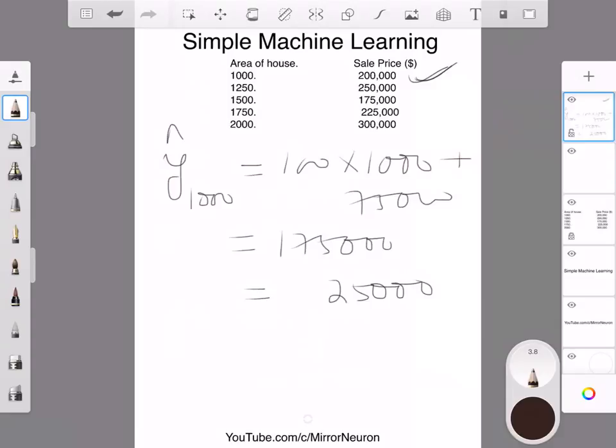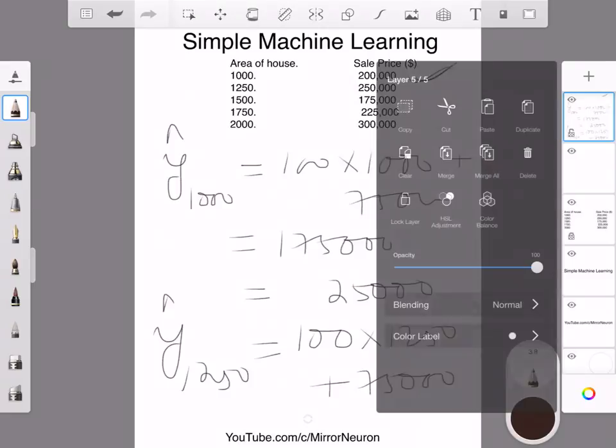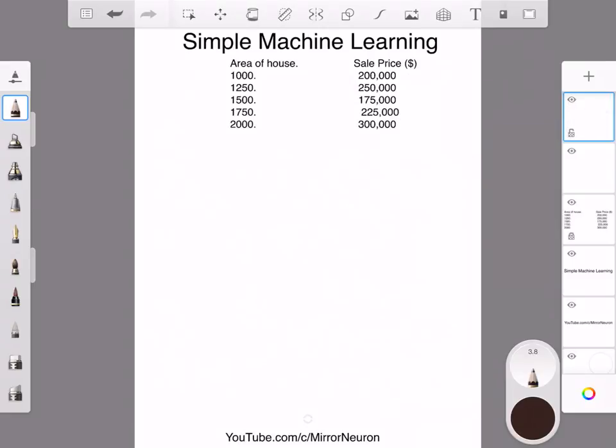Similarly, if I calculate the predicted price for the 1,250 square feet house, I do the similar calculation: 100 times 1,250 plus 75,000. I would get roughly around 200,000. So my y for 1,250 is roughly 200,000. If I compare it with my second value, then I am off by 50,000.